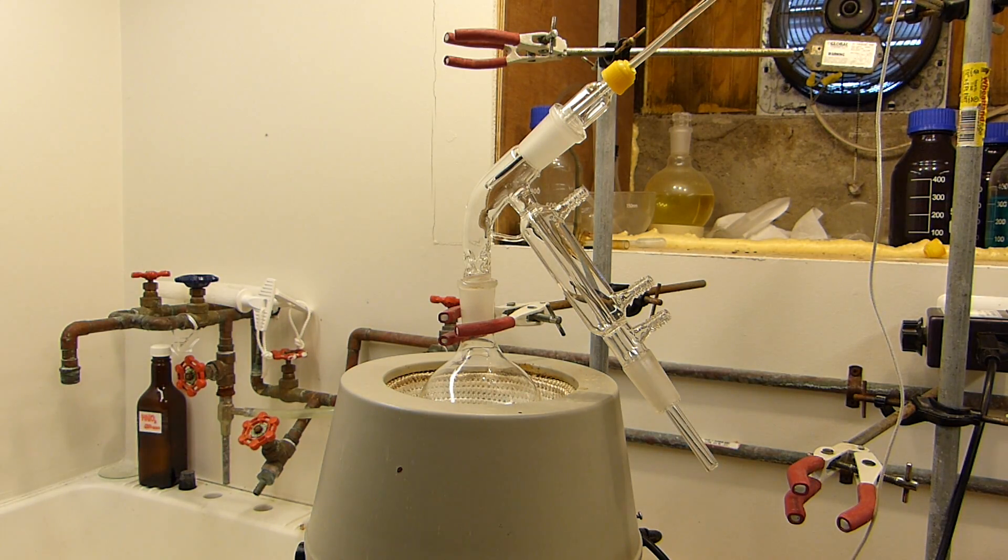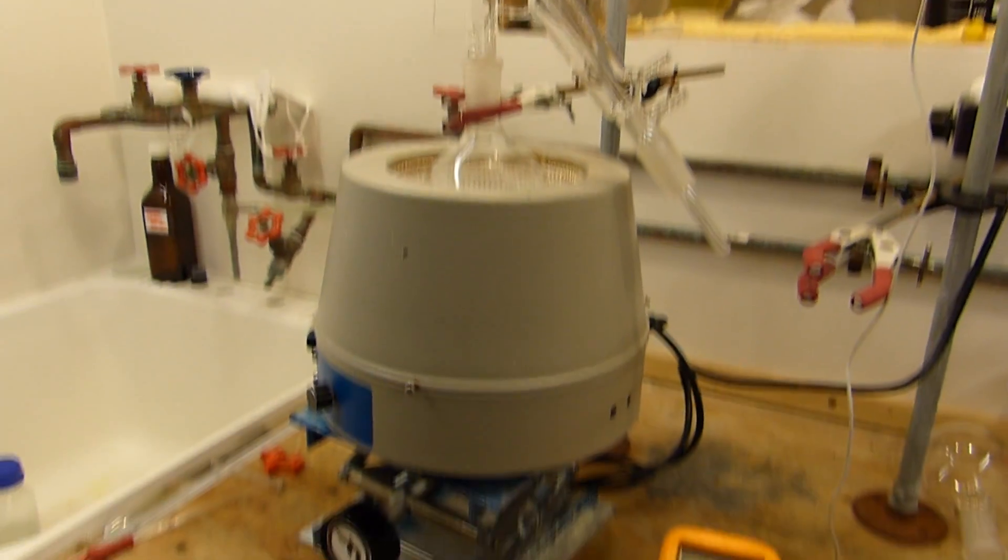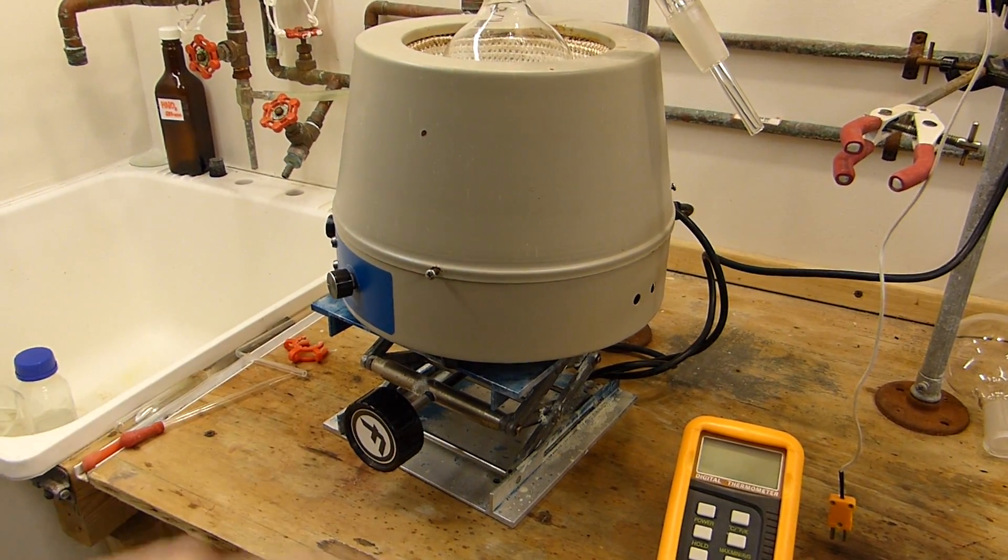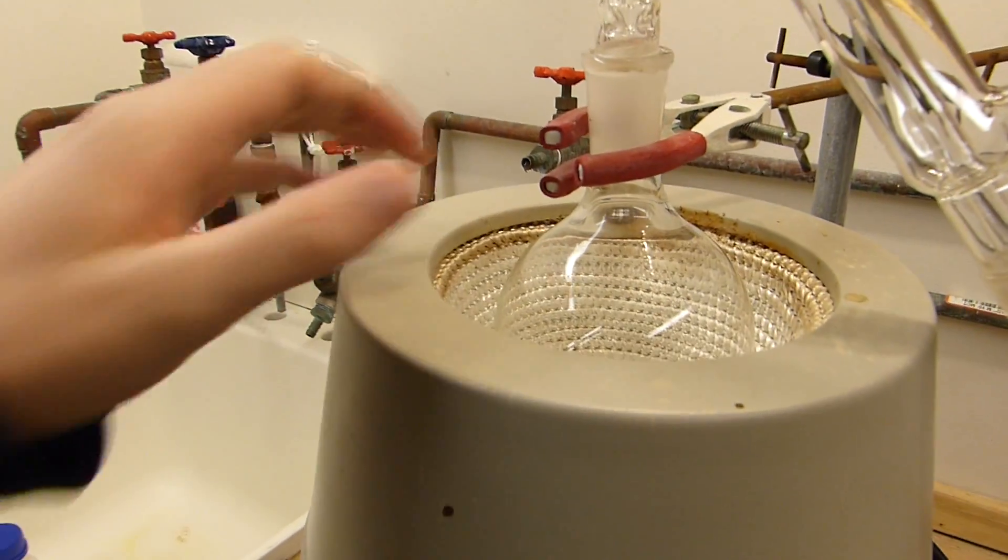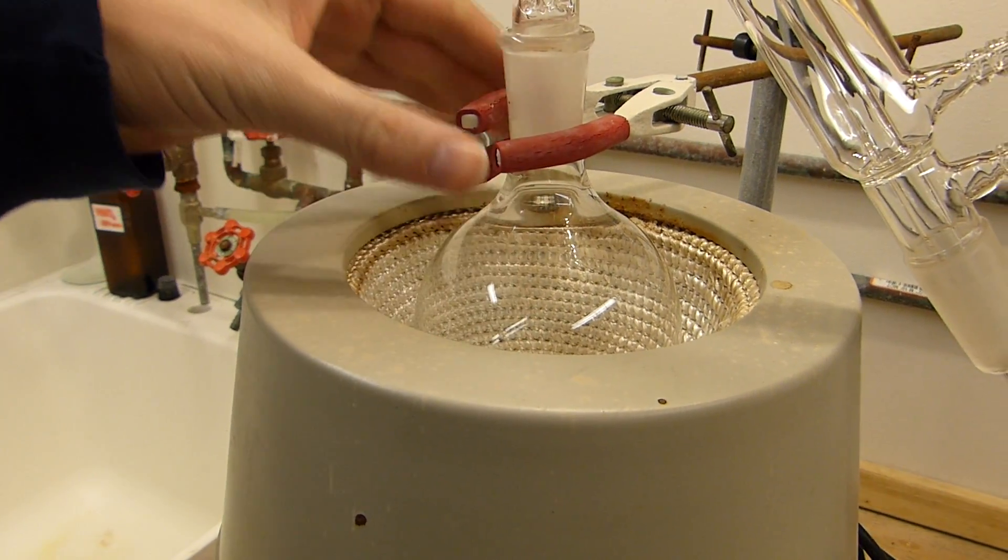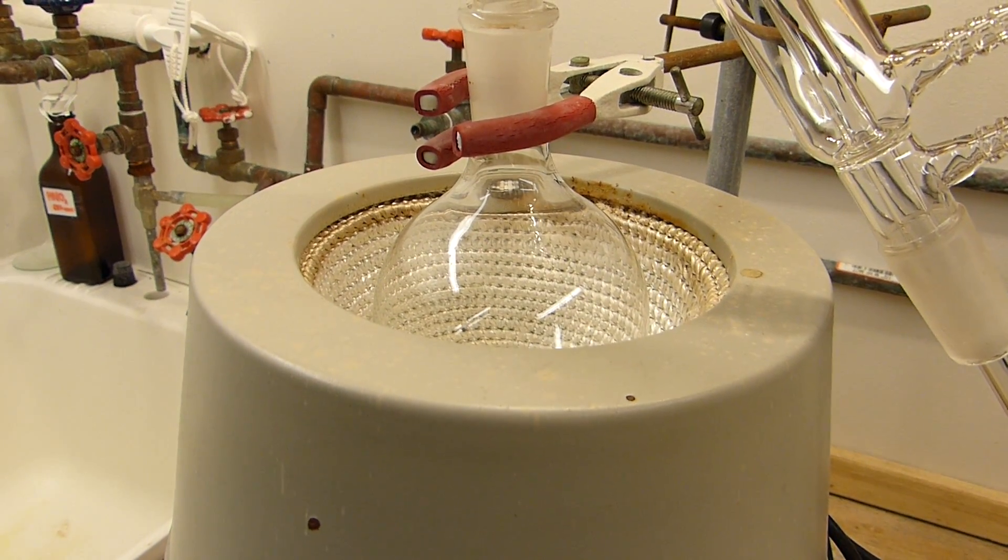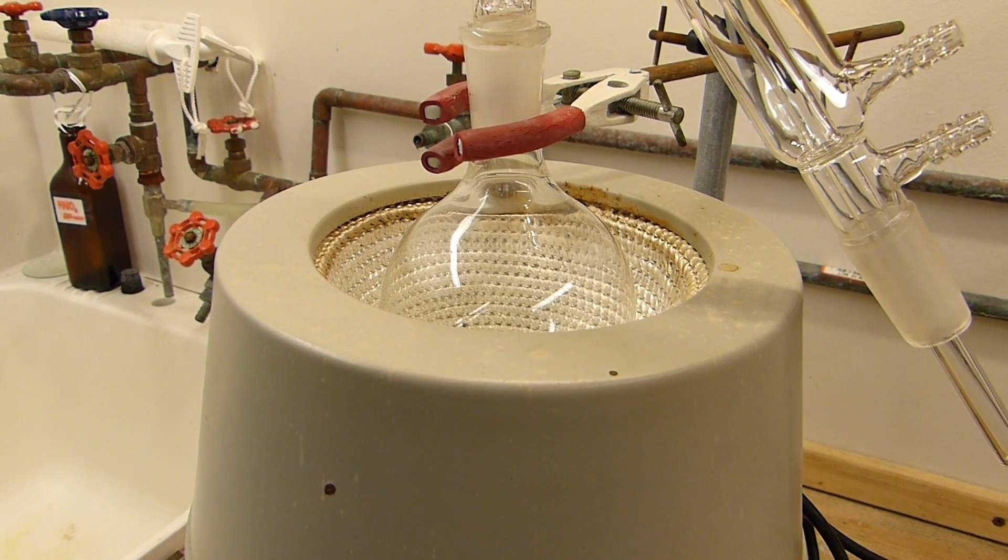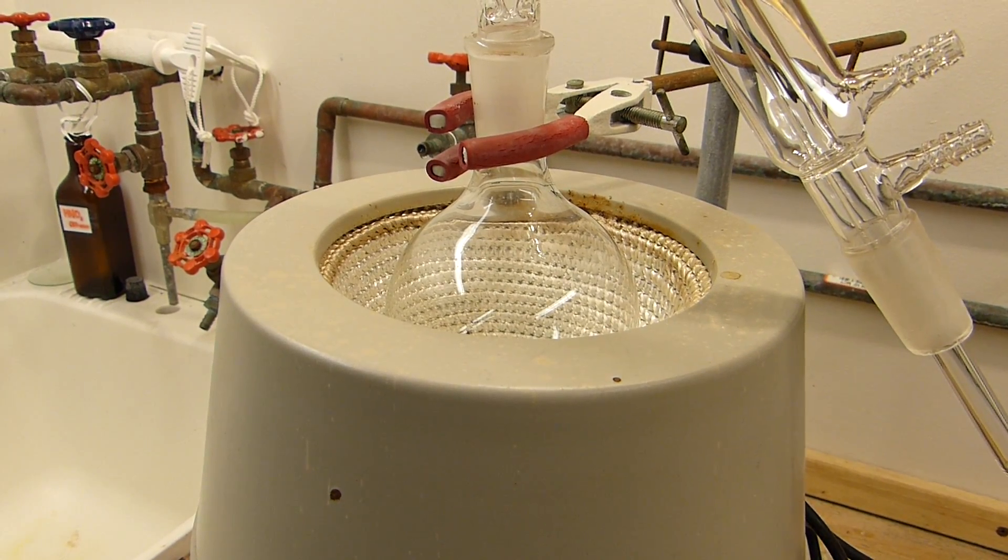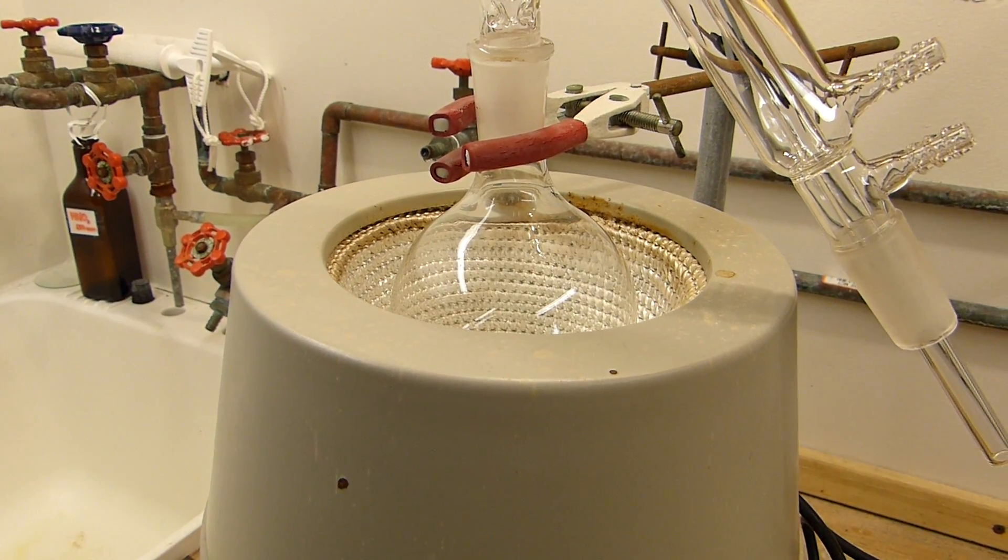So I've set up the apparatus required for this reaction, and you can see that there are a few standard components you might recognize. The lab jack here, the one liter heating mantle, in it I've got a 500 milliliter round bottom flask that will hold the salicylic acid to be decarboxylated thermally. Now this reaction takes place at a pretty high temperature, in the order of like 180°C, and phenol, which is going to be leaving this reaction, is a solid at room temperature.